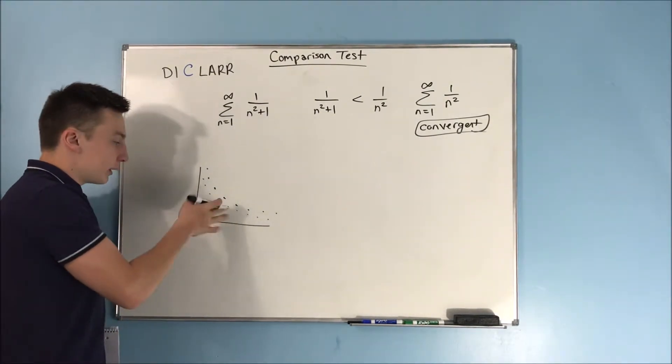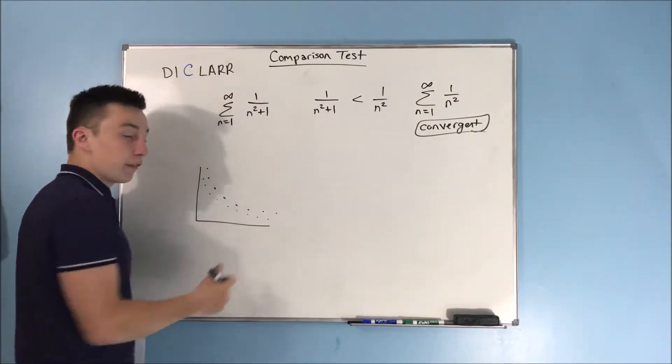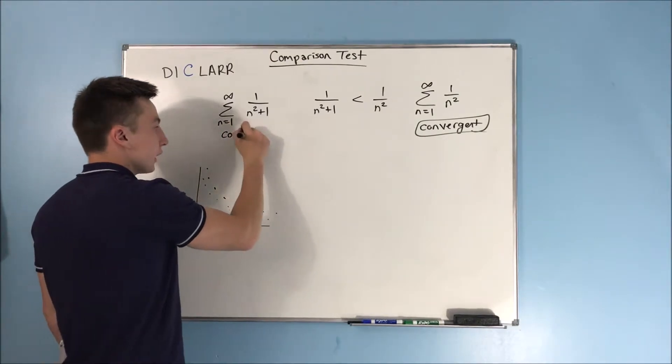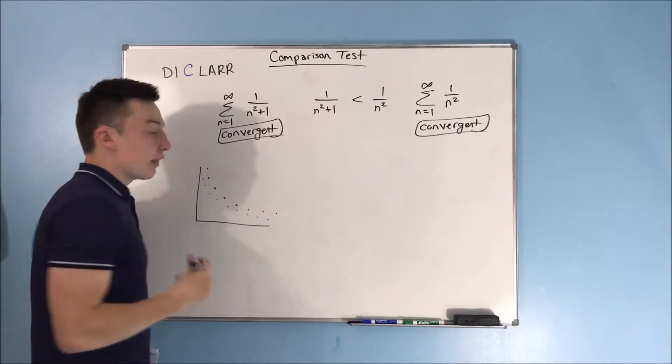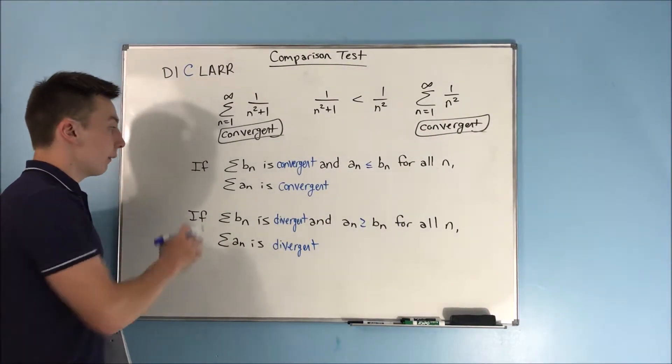Because it's always going to be less than this one that already converges, the one on top. So we know that this one is going to be convergent as well. And that's the idea.